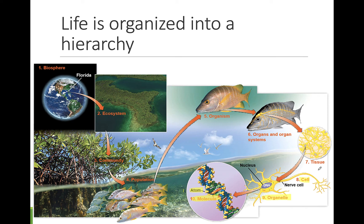A group of cells work together to form a tissue, and a group of tissues work together to form an organ or an organ system. Your nervous system is made up of a brain and spinal cord. Each of these organs is made up of nervous tissues, which is made of nerve cells. All of the organs of your body work together to make an organism — you.